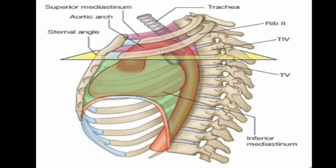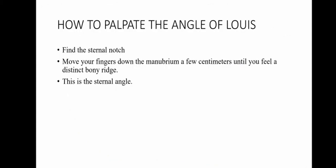This image shows the different structures which lie at the level of the angle of Louis. To palpate this important clinical landmark, one has to find the sternal notch and move one's fingers down the manubrium a few centimeters until one feels a distinct bony ridge, which is the sternal angle.